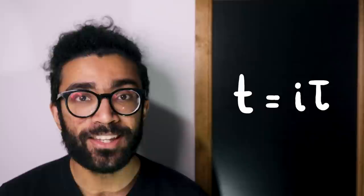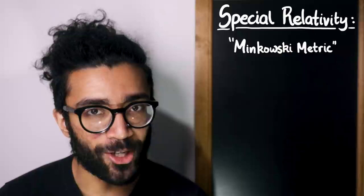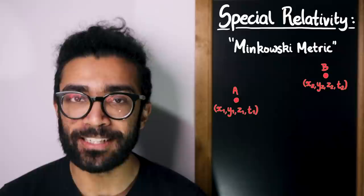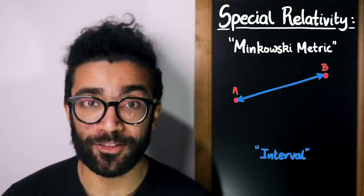Now, let's get back to the imaginary time substitution t is equal to i tau. This kind of Wick rotation is primarily useful in the study of relativity as a mathematical tool. For example, some of you may be familiar with the idea that in special relativity, with Minkowski spacetime, if we consider two events that happen at different points in space and at different points in time, we can find a quantity known as the interval between these two events. This is a four-dimensional extension of finding the distance between two points in three-dimensional space, for example.